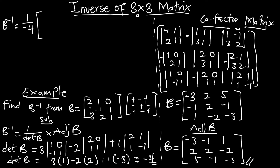Multiplying the adjoint matrix — the transpose of the cofactor — which is: -3, -1, 1 and 2, 2, -2 and 5, -1, -3. When you multiply the 1 over -4 through it, you can leave your inverse this way, or to simplify it, you can say your B inverse is going to be in this simplified form.